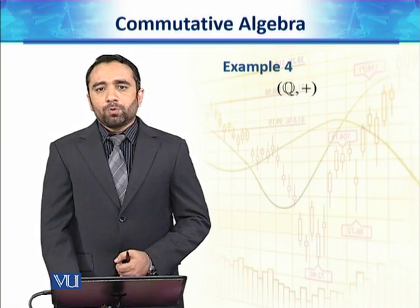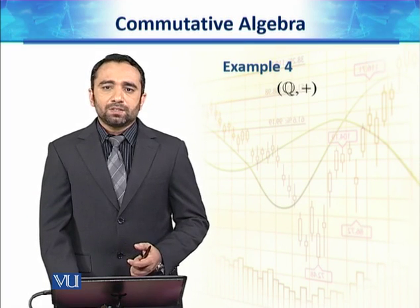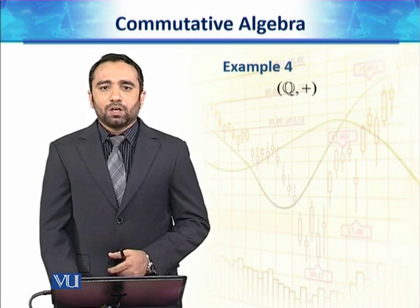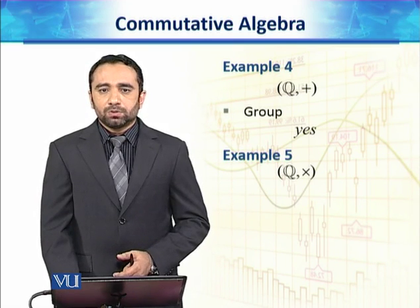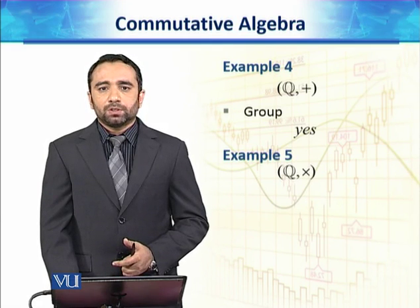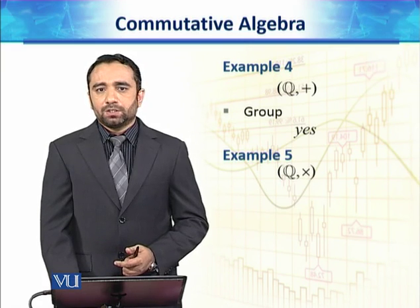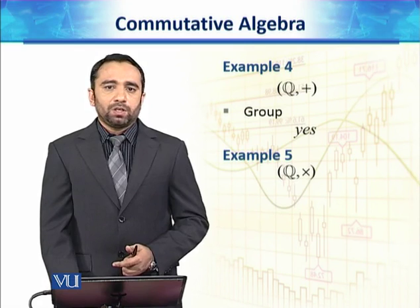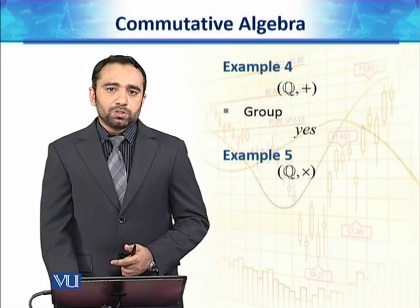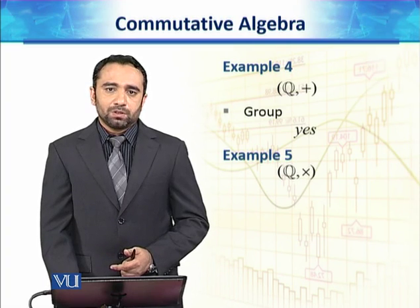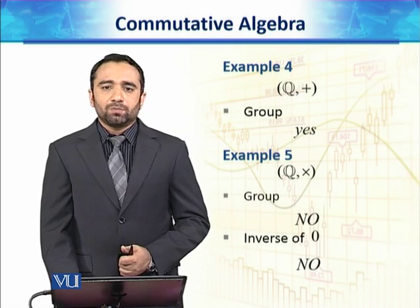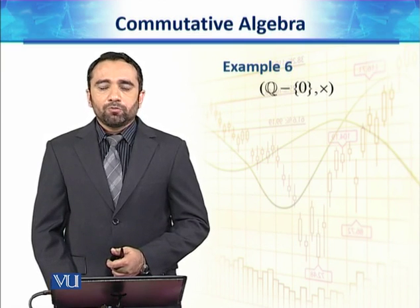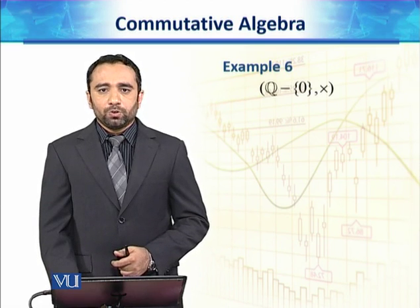By the same reasoning as for Z, Q (the set of rationals) is a group under addition. For Q under multiplication, all axioms hold except that zero does not have a multiplicative inverse in Q. Therefore, Q is not a group under multiplication.